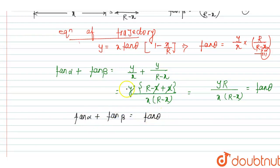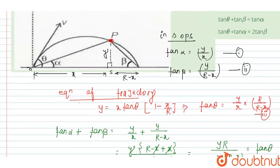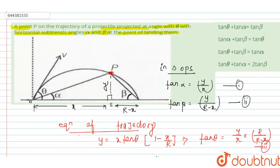This is the relation between alpha, beta, and theta. Looking at the options, tan alpha plus tan beta equals tan theta, which means option B is the right answer for this question. Thank you.